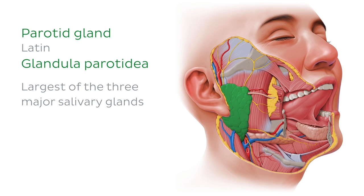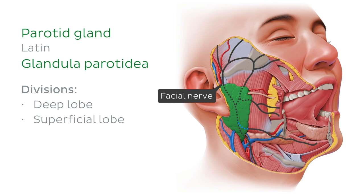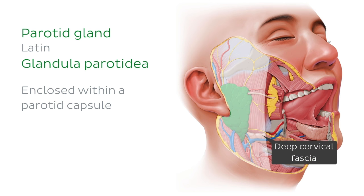It's pyramidal, or kind of triangular in shape, and can be divided into a deep lobe and a superficial lobe, which are separated by the facial nerve. The parotid gland is enclosed within a parotid capsule, which is derived from the investing layer of the deep cervical fascia.